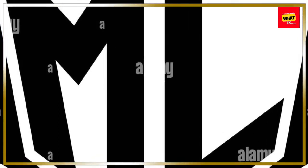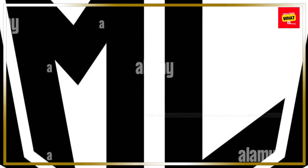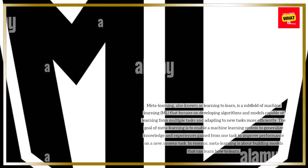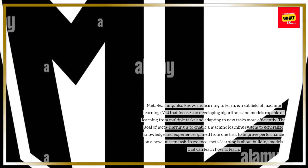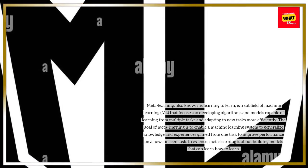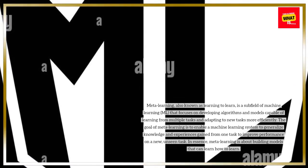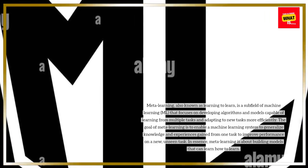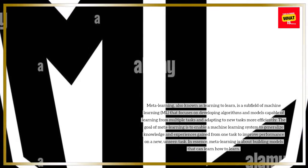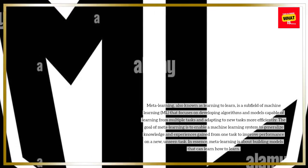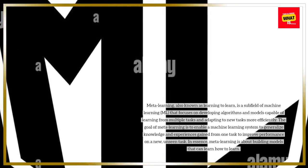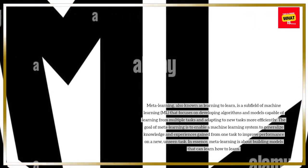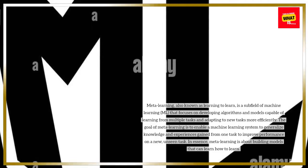Meta-learning, also known as learning-to-learn, is a subfield of machine learning (ML) that focuses on developing algorithms and models capable of learning from multiple tasks and adapting to new tasks more efficiently. The goal of meta-learning is to enable a machine learning system to generalize knowledge and experiences gained from one task to improve performance on a new, unseen task.